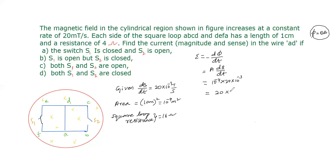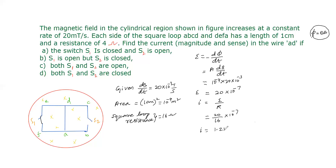Current equals EMF divided by resistance, so 20 × 10⁻⁷ divided by 16 ohm, giving a current of 1.25 × 10⁻⁷ ampere.